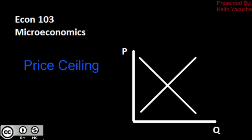Welcome back to Econ 103, Introduction to Microeconomics. In this video, we're going to be taking a look at the walkthrough of a price ceiling — how to calculate the quantity exchanged underneath the price ceiling, the different willingness to pay, willingness to accept, as well as conducting a surplus analysis. The expectation is that you have already looked at the price controls video and gone through the basics of what a price ceiling is and the theory behind it.